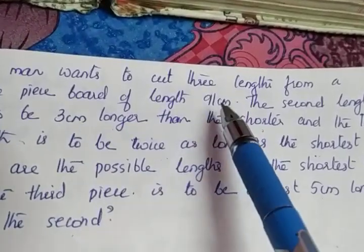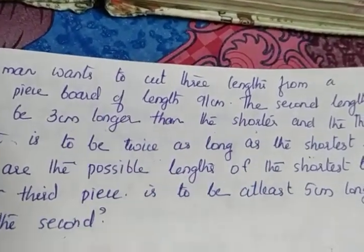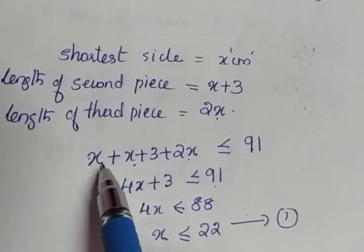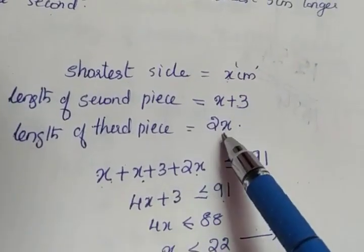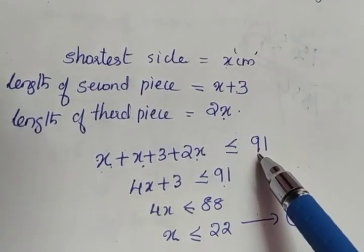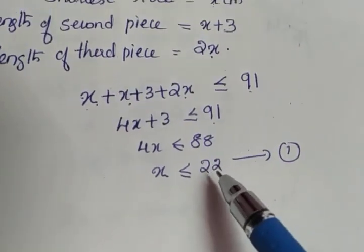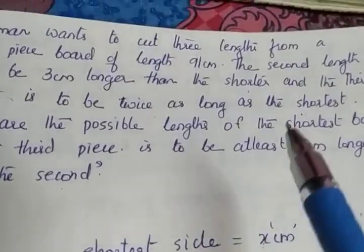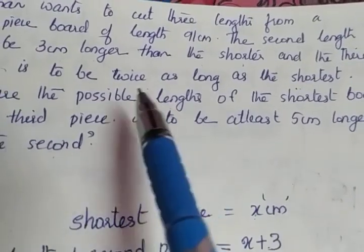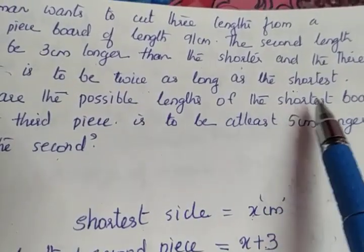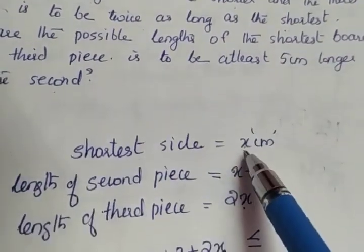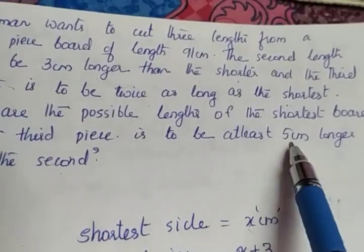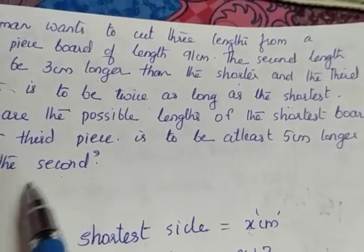We have a single piece board of length 91 cm, and the condition that the sum of x, x plus 3, and 2x is less than or equal to 91 gives us the inequality x less than or equal to 22. Now towards the end of the question, we have to find the possible length of the shortest board, meaning we need to find the value of x. The additional condition is that the third piece is at least 5 cm longer than the second.